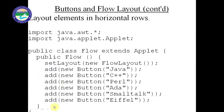In case of FlowLayout, we arrange elements one by one. The example imports java.awt and java.applet.Applet. The class is public class Flow extends Applet, and in its constructor we write setLayout(new FlowLayout). Then we add elements: add(new Button("Java")), add(new Button("C++")), add(new Button("Perl")), and so on — six different elements in total.